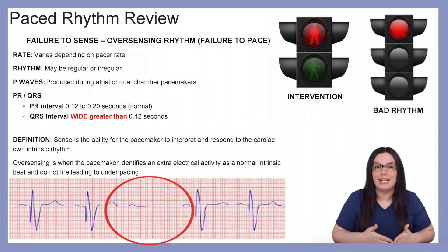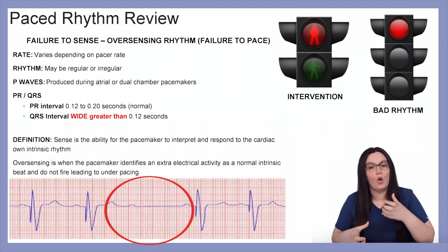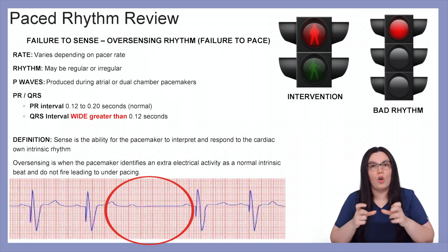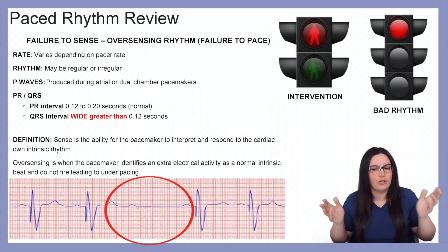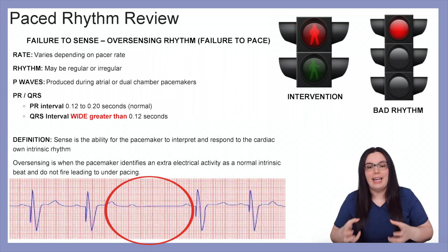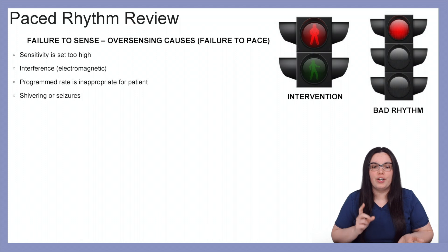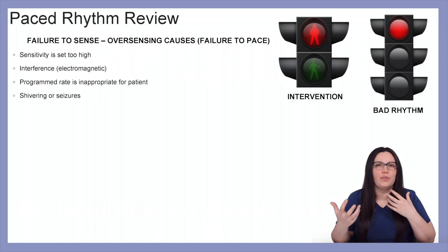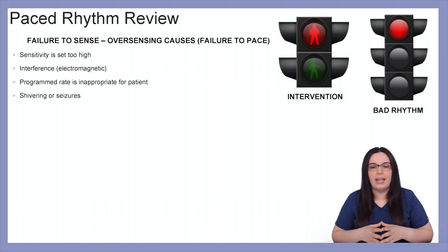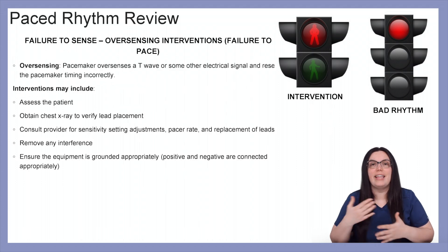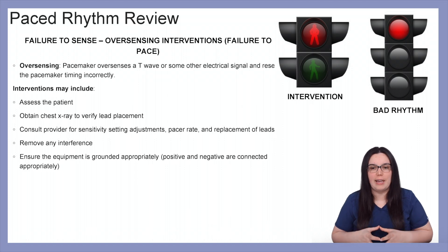Next we're going to look at failure to pace, which should also be referred to as failure to sense and over-sensing. The rate, rhythm, P waves, PR interval, and QRS are always the same. Over-sensing is when the pacemaker identifies extra electrical activity as a normal intrinsic beat and fails to fire, leading to under-pacing. Causes include sensitivity set too high, electromagnetic interference, an inappropriate programmed rate, or shivering and seizures. Over-sensing occurs when the pacemaker over-senses a T wave or some other electrical signal and resets the pacemaker's timing incorrectly.